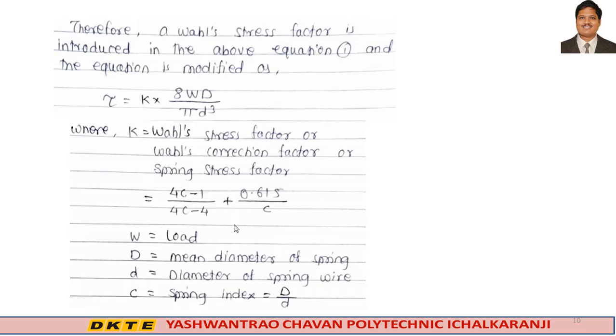The length of inner fiber is less than the length of the outer fiber. Therefore, the inner fiber gets subjected to stress concentration. The effect of stress concentration is severe and considerably larger for high values of spring index. Therefore, a Wahl's stress factor K is introduced in the above equation, and the equation is modified as tau equals K into 8WD divided by pi d cube, where K is the Wahl's stress factor, Wahl's correction factor, or spring stress factor.